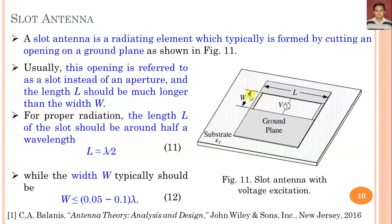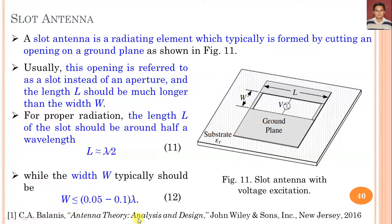The width W is small compared to the length L. W is considered in the range of 0.05 to 0.1 multiplied by lambda. So we can say W is always considered about 0.05 lambda, 0.06 lambda, or 0.07 lambda. This is the basic configuration of the slot antenna, with length L nearly equal to lambda by 2 and width as given in expression 12.